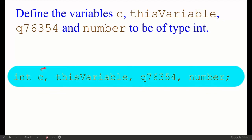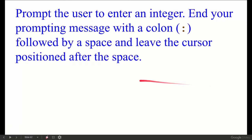We can also write them separately: int c; then int thisVariable, q7, 6, 3, 5, 4; and then int number; — writing each declaration on its own line with a semicolon.